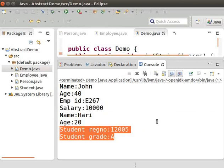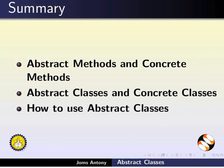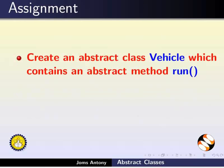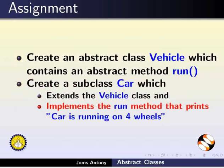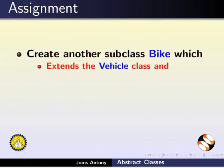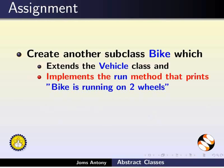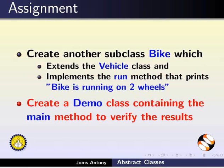This brings us to the end of this tutorial. In this tutorial, we have learnt about Abstract Methods and Concrete Methods, Abstract Classes and Concrete Classes, and how to create and use Abstract Classes. As an assignment, create an abstract class Vehicle which contains an abstract method run. Create a subclass Car which extends the Vehicle class and implements the run method that prints car is running on four wheels. Also create a subclass Bike which extends Vehicle and implements run to print bike is running on two wheels. Create a Demo class with the main method to verify the results.